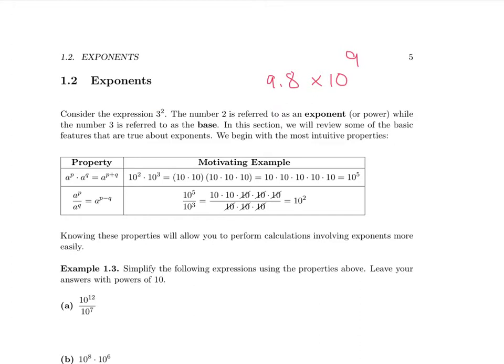Let's look at the first property. If you take a number a and raise it to the power p, and then take the same number a and raise it to the power q, the result is simply taking the number a and raising it to p plus q. Why should that be true? Well, let's take an example. Suppose you took 10 squared and multiplied it by 10 cubed. Let's look at what that really is.